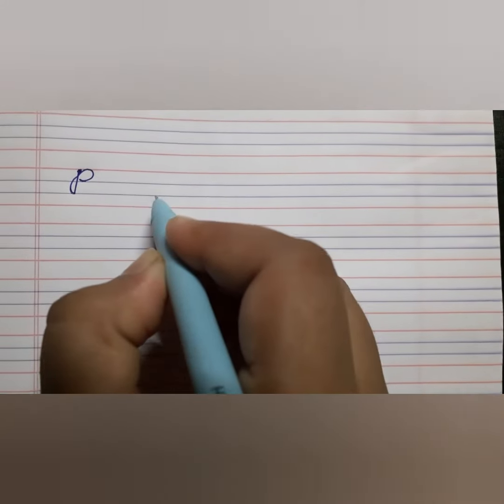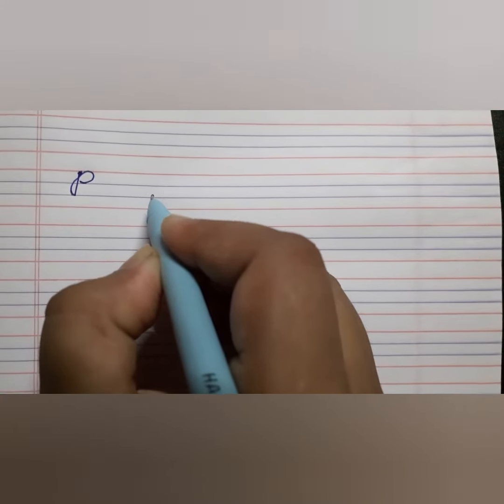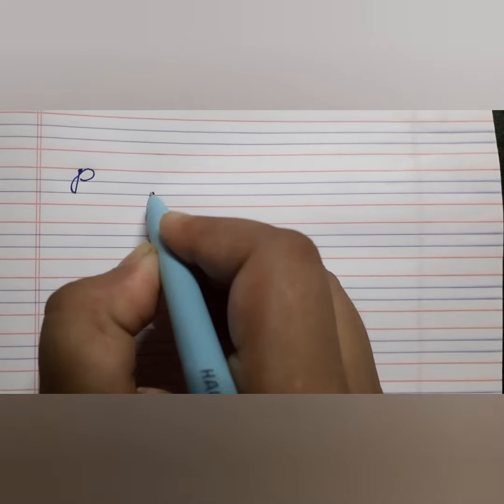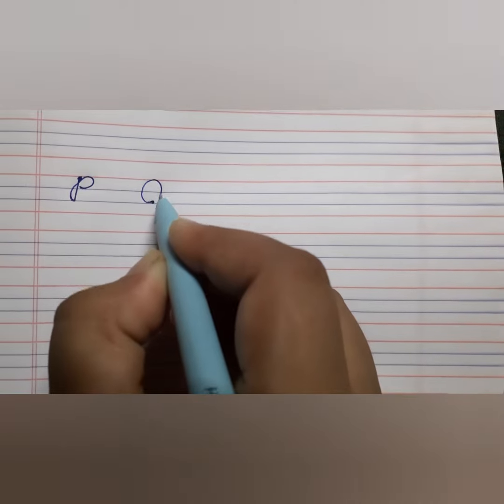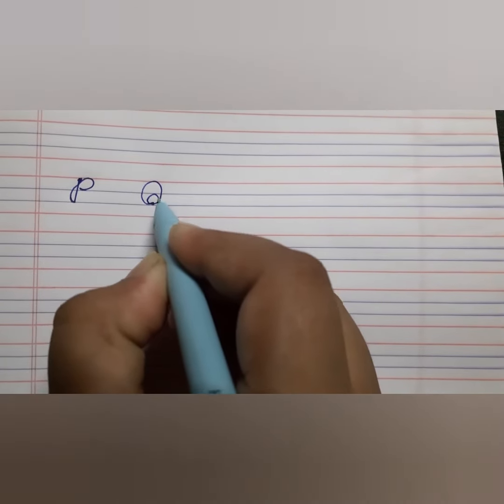For Q we have to move anti-clockwise. That means from here you will start, go leftward, make a circle like this and done.